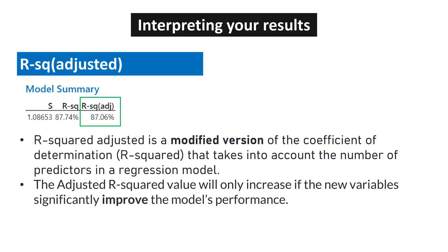R-squared adjusted is a modified version of the coefficient of determination R-squared that takes into account the number of predictors in a regression model. The adjusted R-squared value will only increase if the new variables significantly improve the model's performance.